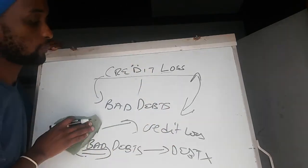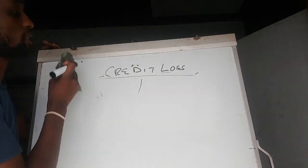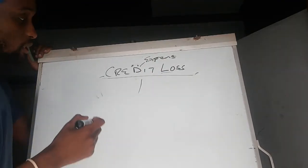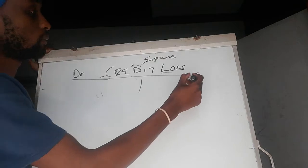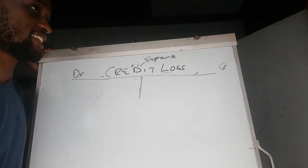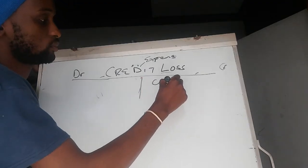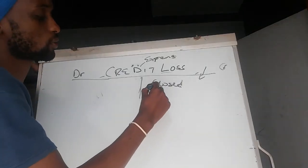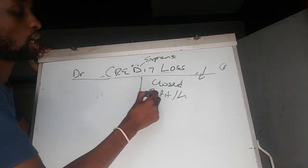Credit losses are recognized in a business as an expense. What does an expense do? An expense increases on the debit side. It is closed off on the credit side — we don't decrease expenses, we close them off. Expenses are always closed off in the profit or loss account. If I find time I'll make a video about the profit or loss account.